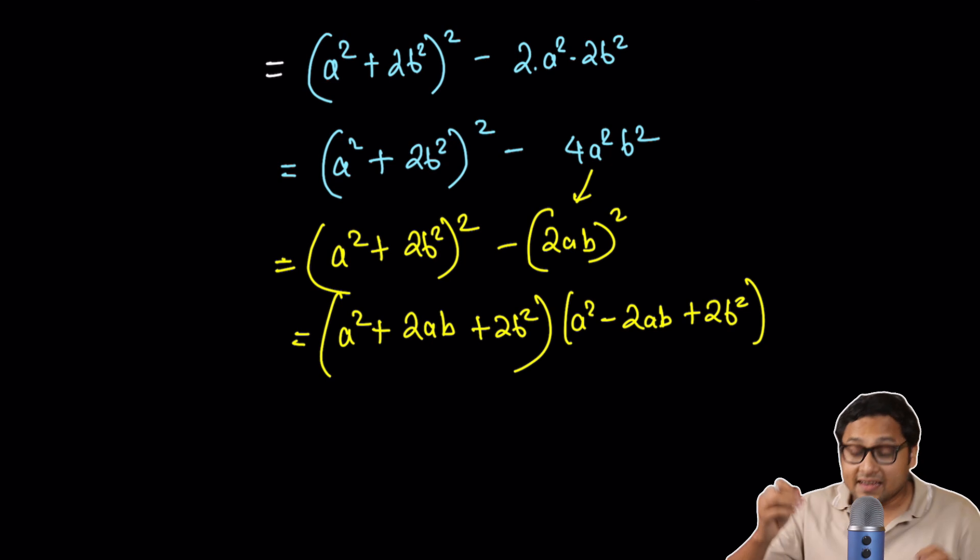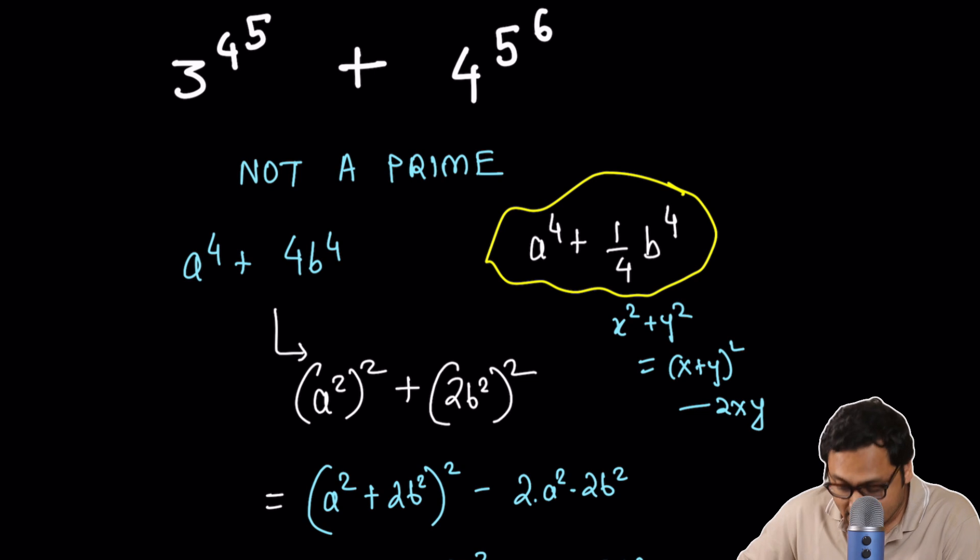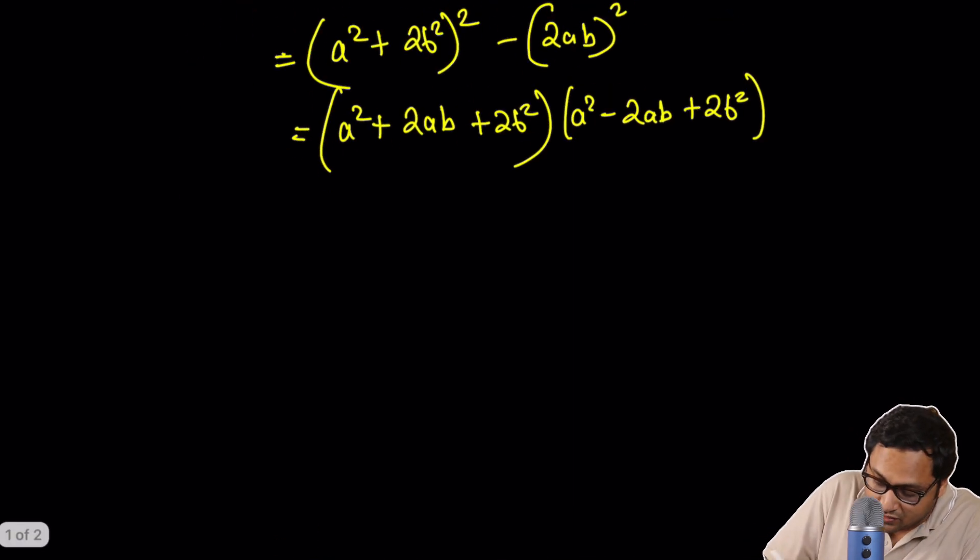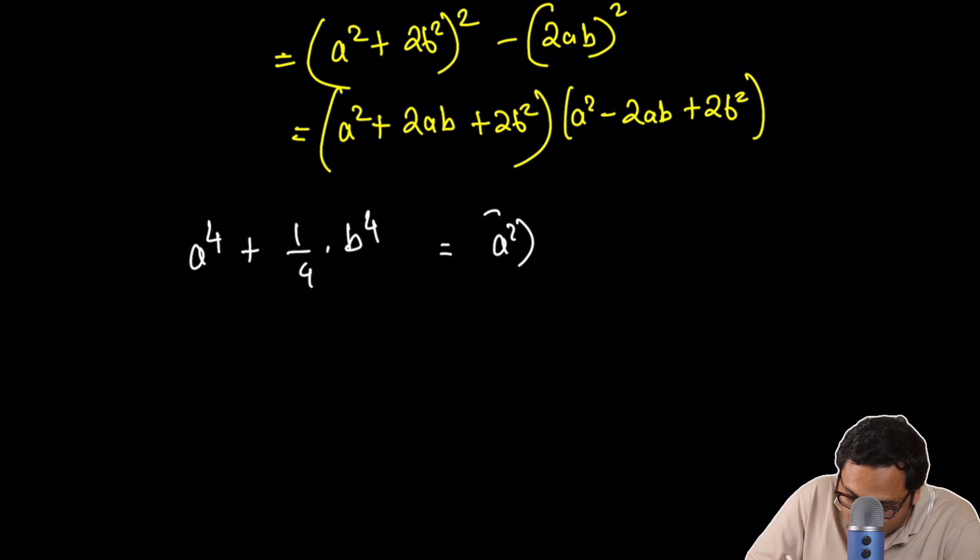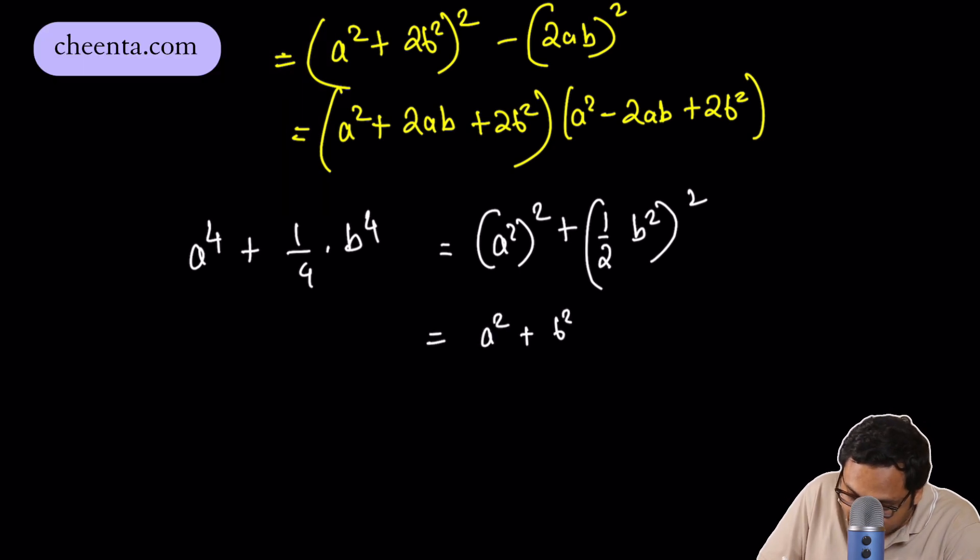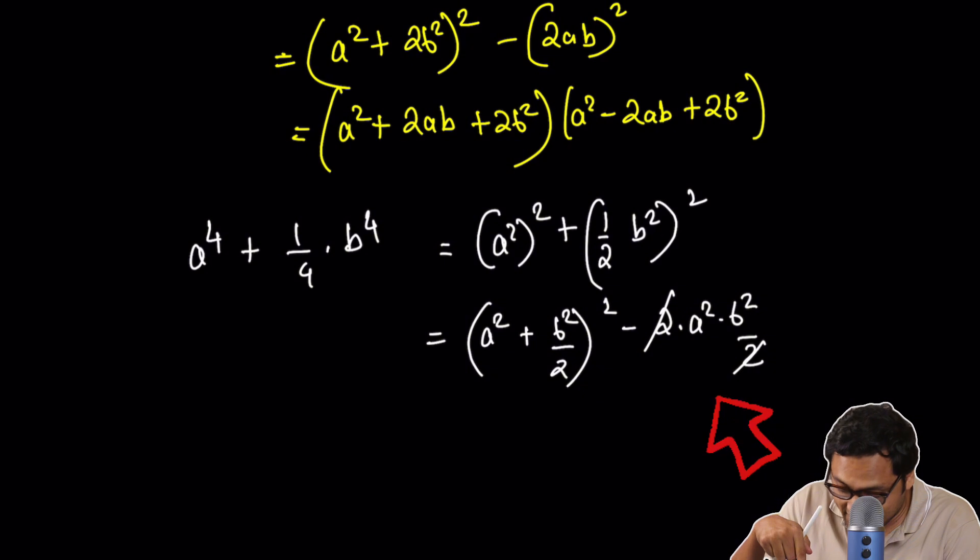The surprising thing is that we can also play the same game with an expression of this particular format. Let's see. I will quickly do the calculation a to the power 4 plus 1 by 4b to the power 4. So what can we do about this? Well, we can do a square whole square plus half times b square whole square. So a square plus b square by 2 whole square minus 2 times a square times b square by 2.